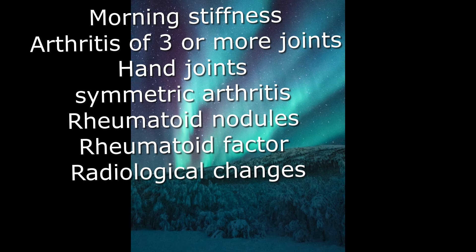Other hematological pointers include an elevated ESR or C-reactive protein, leukocytosis, and antinuclear antibodies in up to about 30 to 40 percent of cases. Radiological features include uniform symmetric joint space narrowing, joint subluxations, joint destructions, and sometimes joint collapse.